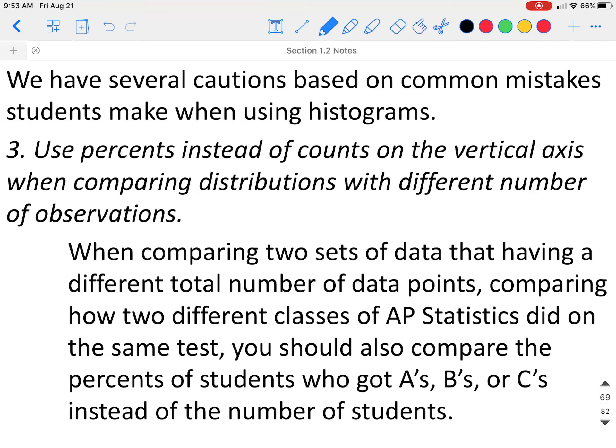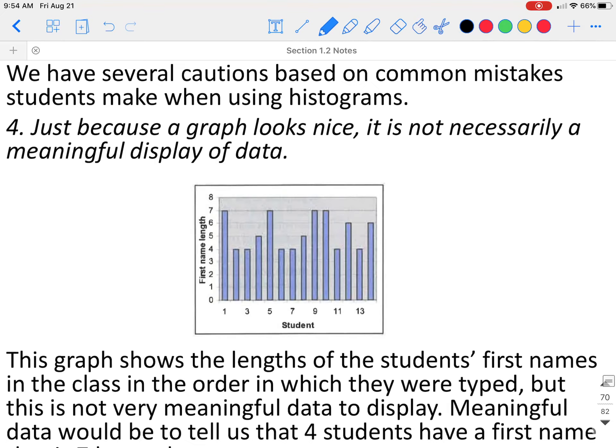Another mistake is using percents instead of counts on the vertical axis when comparing distributions with different number of observations. You need to make sure if the number of values in your data sets are different, you're using percents instead of the number count. If you're comparing the number of items and the original data sets themselves aren't the same size, that's not going to be a fair comparison. But if you're comparing what percent of the first group compared to what percent of the second group, that will give you a better idea of what is happening.